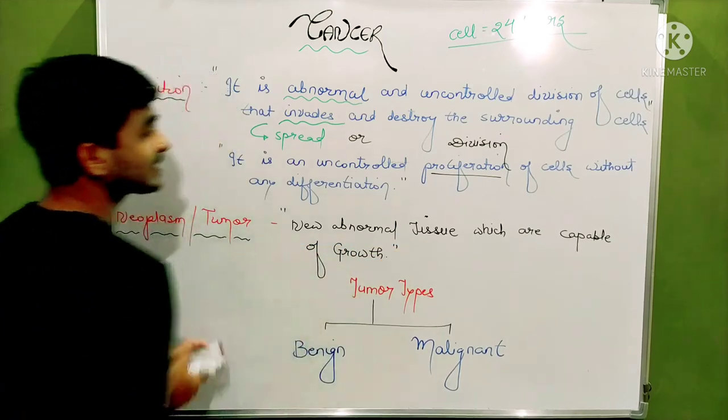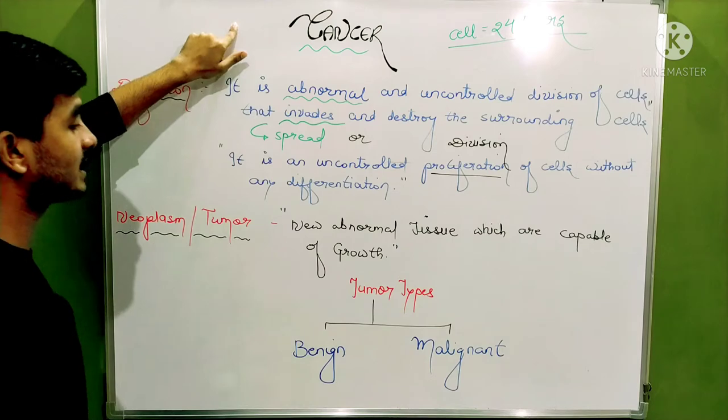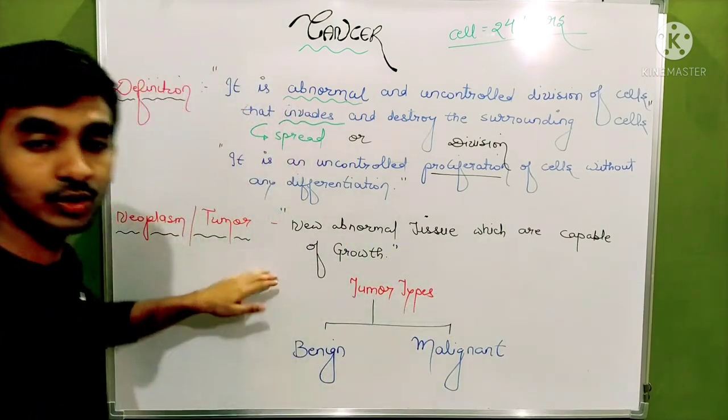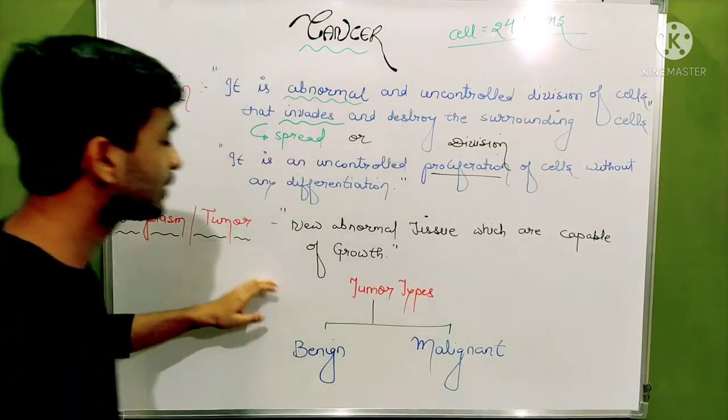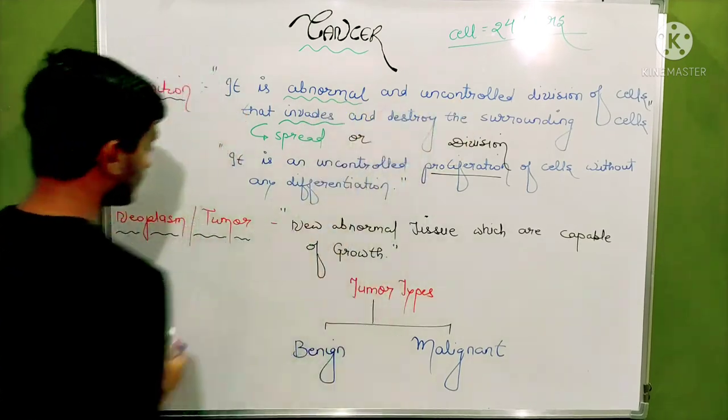New abnormal tissue - the cells formed after abnormal division of the cells. Those abnormal group of cells are capable of growth. Those sort of tissue which are capable of growth are known as tumours. In which the tumours grow abnormally and uncontrollably.